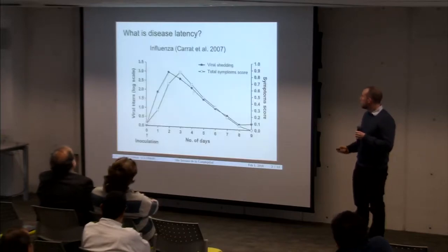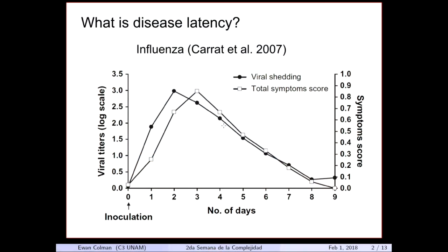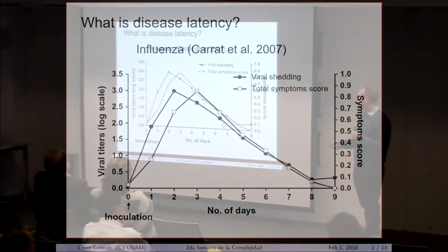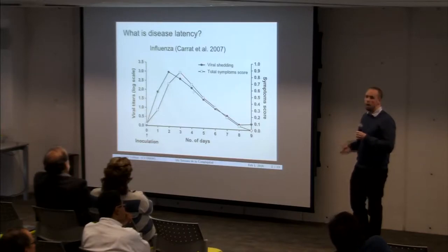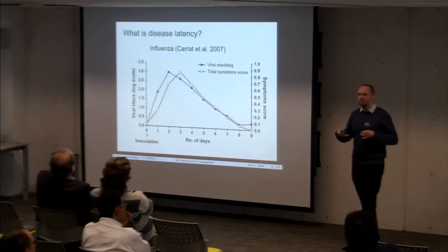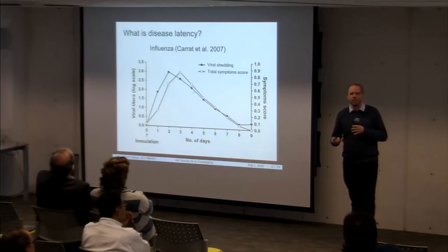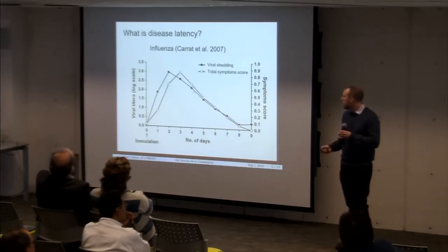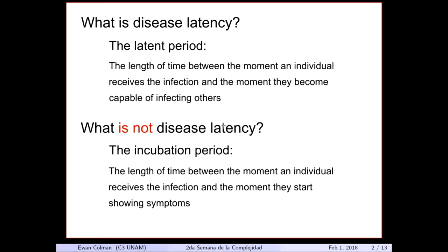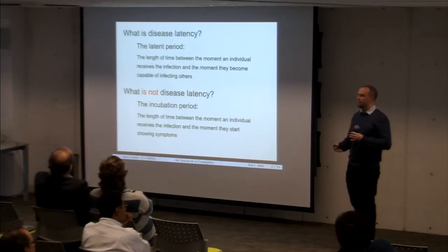Similarly with influenza, studies find roughly the opposite: there's a latent period with very little viral shedding, but then it peaks after about two days, while symptoms don't start until about three days. So there's a day where inoculated patients are able to infect other people while probably unaware they have the disease because they're not showing any signs. To summarize: disease latency is the time between receiving the infection and the time you're able to infect others — but it's not the incubation period, which is the time between getting infected and starting to show symptoms.